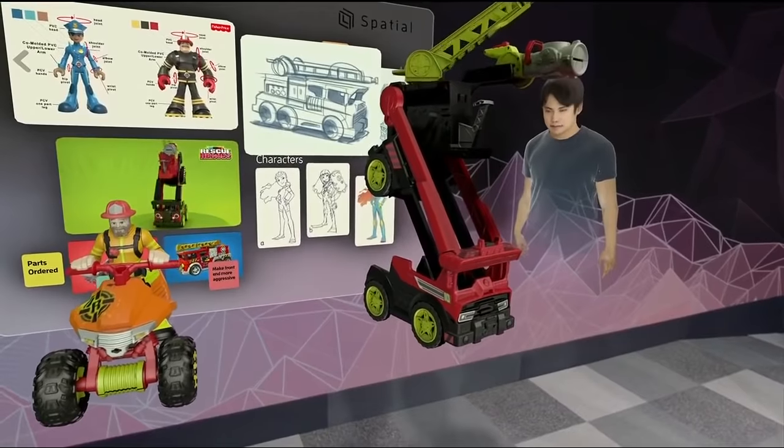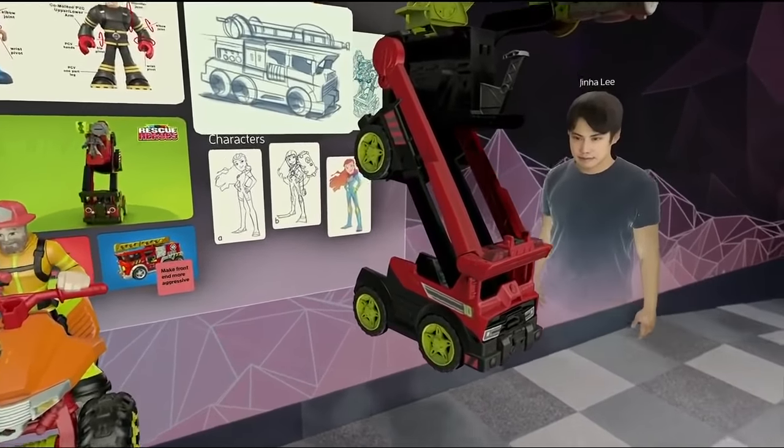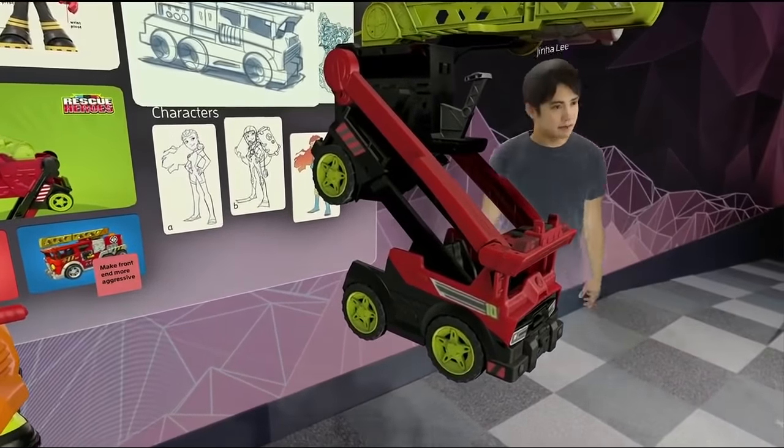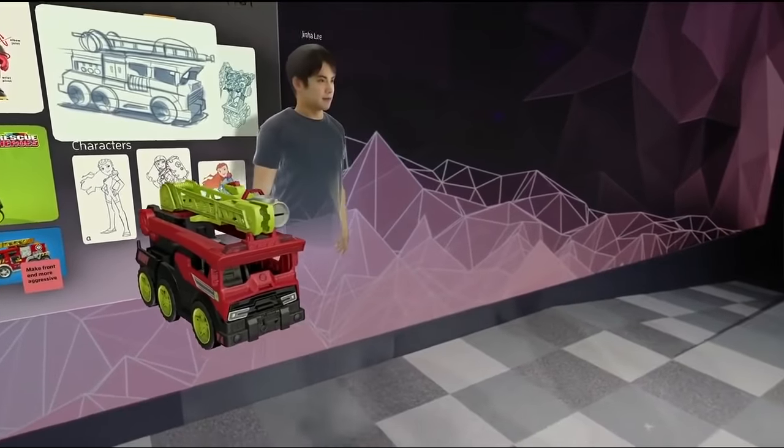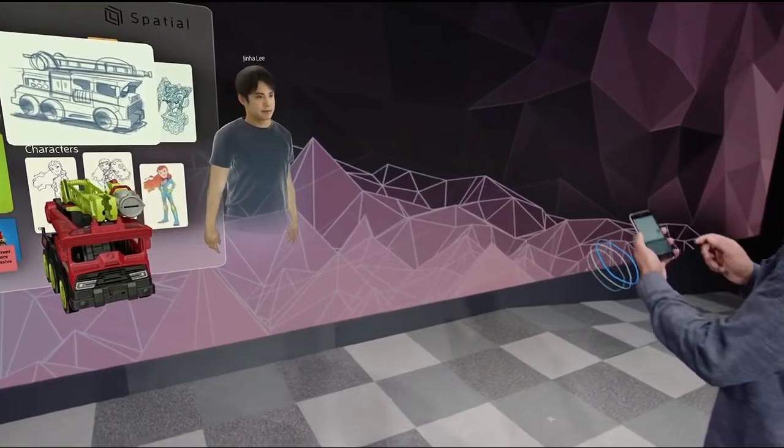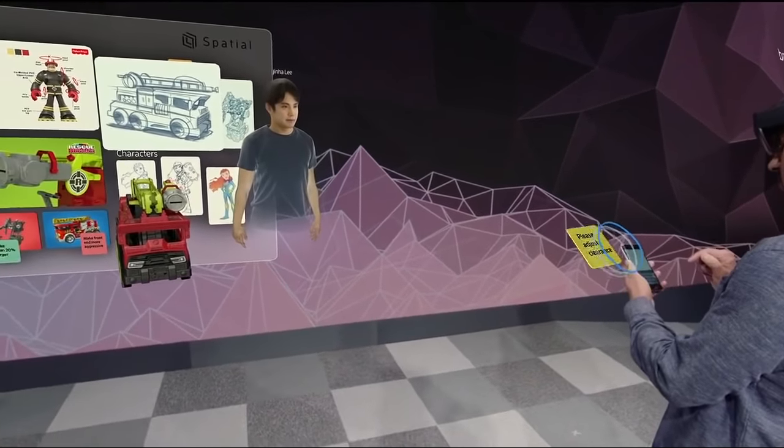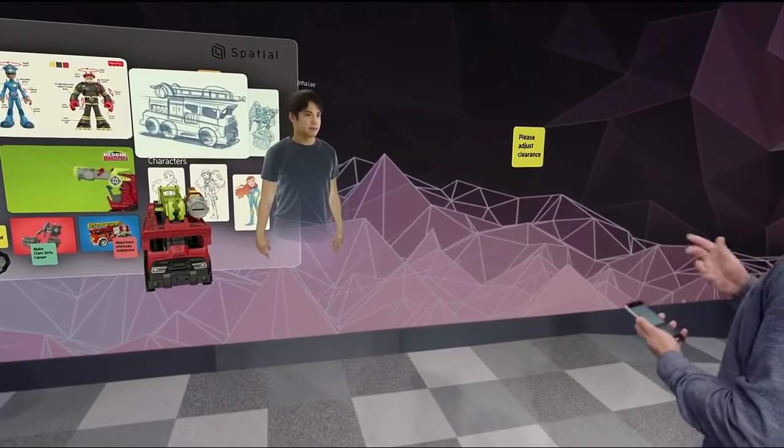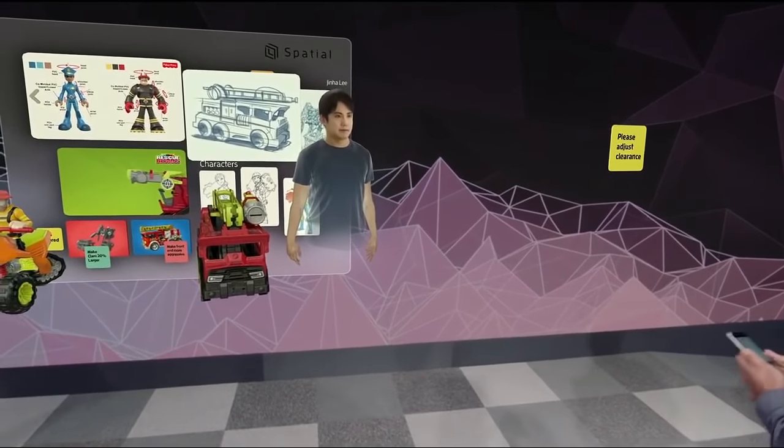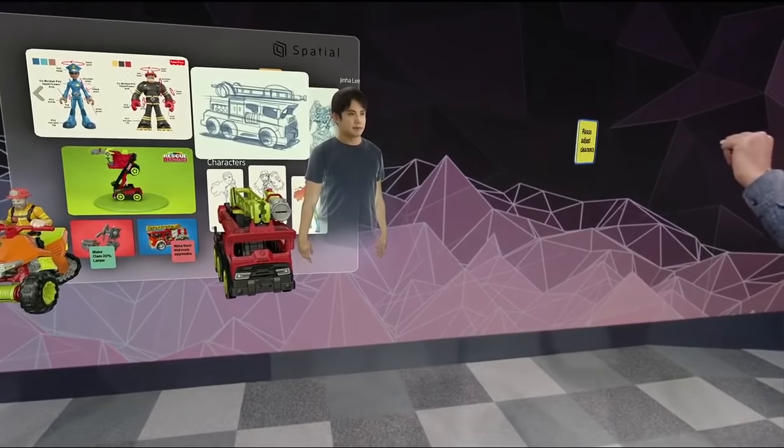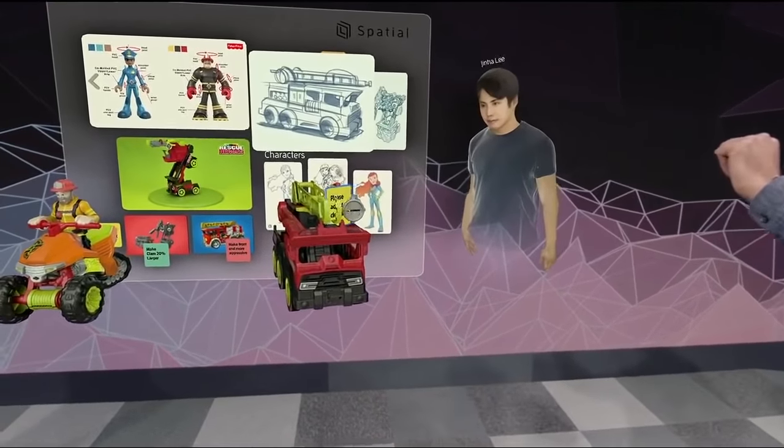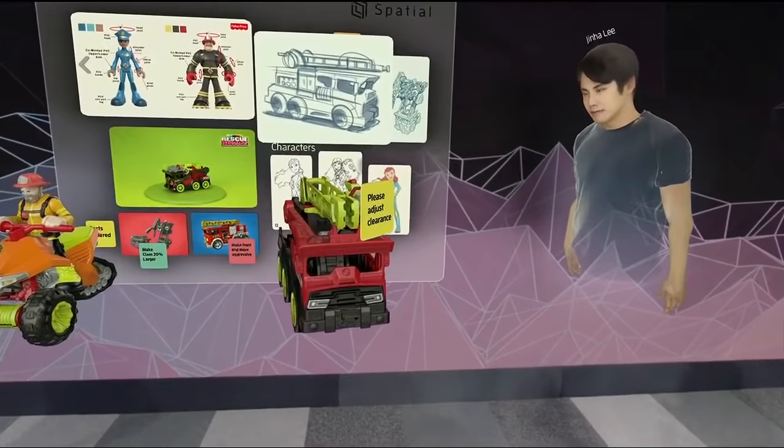For instance, guys, take a look at this wheel clearance here. Oh, yeah. I can see that's going to be a problem. So, I can pull out my Spatial phone app and write a quick note, and then just hit Send, and it becomes a digital sticky note, which I can just grab and stick right onto the fire truck so that we can have engineering revise this later.